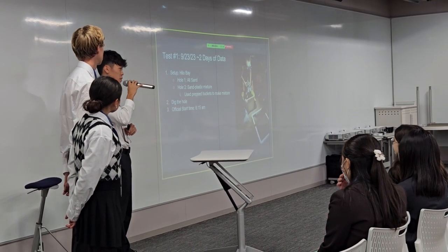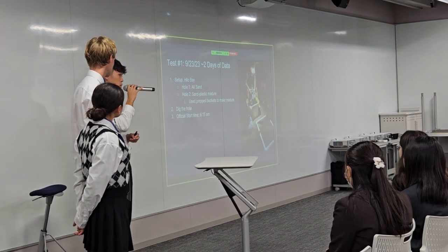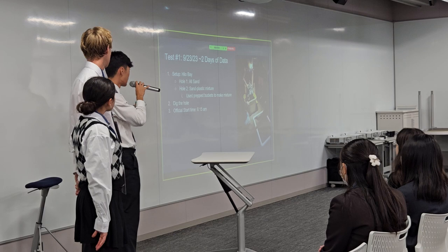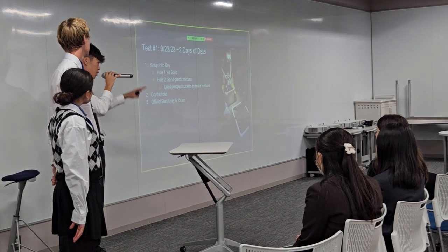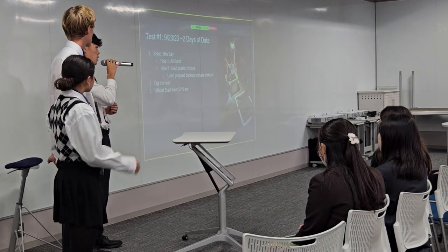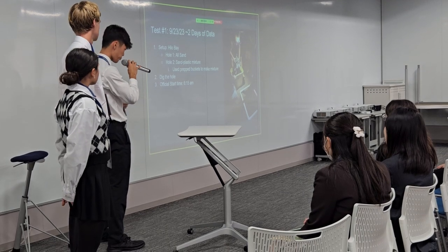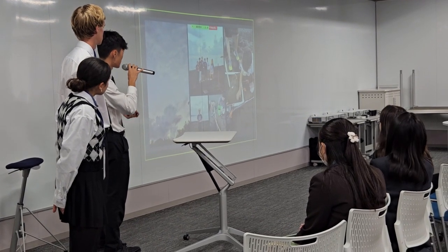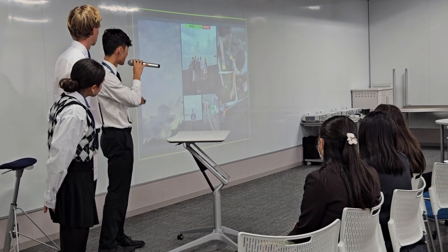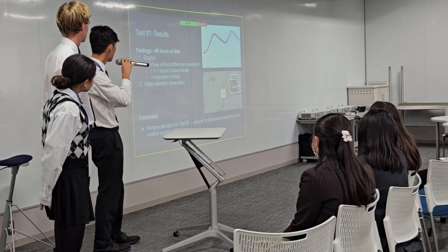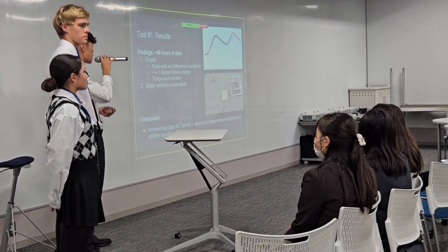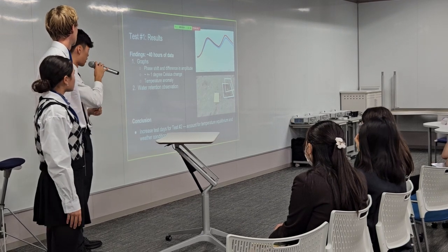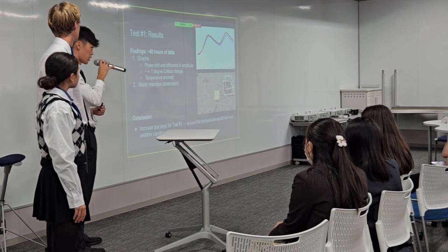There's a picture on the side of us setting up the experiment on the beach. This is very early in the morning, around 5 a.m., because we wanted to get in there before the sand started to rise in temperature when the sun came out. We set up in Hilo Bay, near our hometown. Our first hole was filled with all sand — that was our control — and we compared readings from that to our second hole, filled with sand and plastic. After digging the holes and starting at 6:15 a.m., we were good to go. Over the next two days, we recorded data at the site and got about 40 hours of usable data. We saw a phase shift in the temperature between the different depths of our loggers, and a difference in the amplitudes of these temperatures.